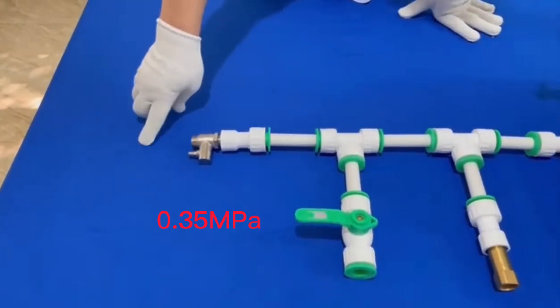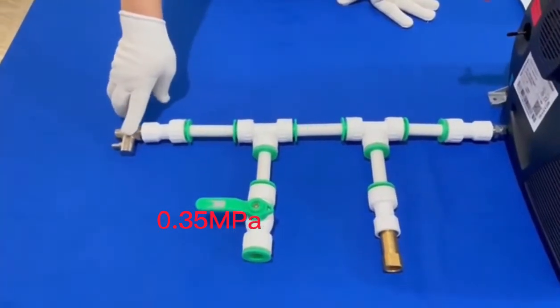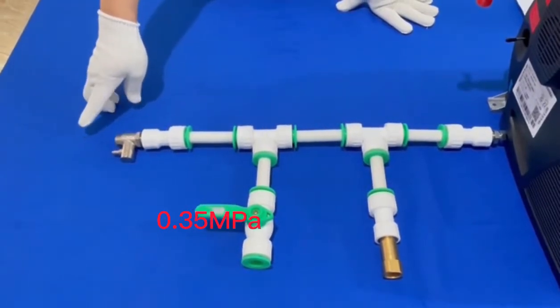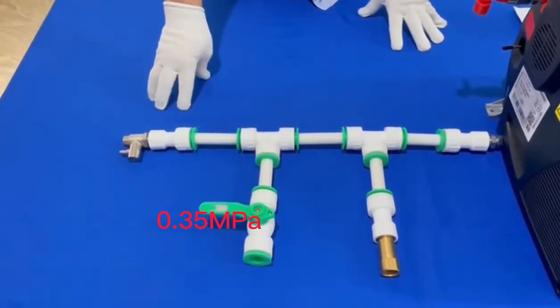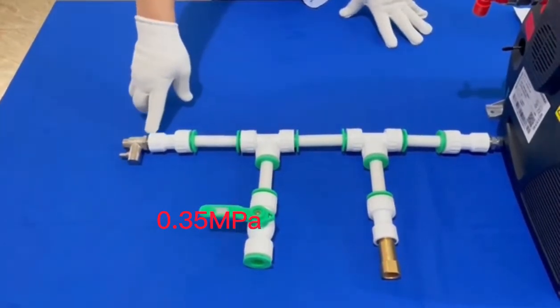Second, when the water pump output pressure reaches 0.35 Ampere, the extra pressure will be released to the outside too. So the water pump output pressure must be lower than 0.35 Ampere.